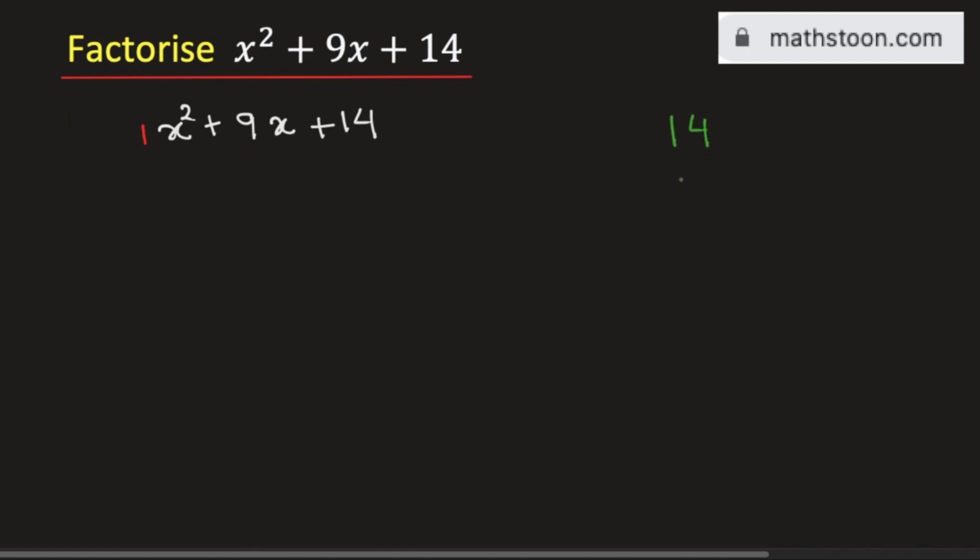See that 14 can be written as 2 times 7 and their sum is equal to 9. So we can consider 2 and 7.